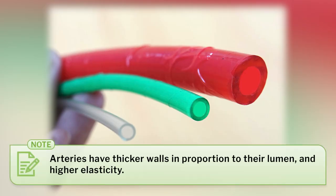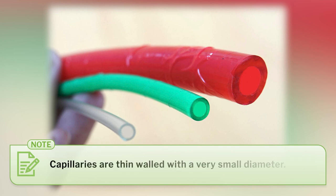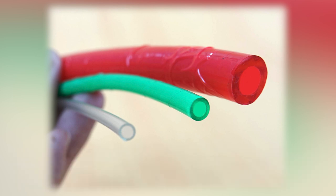Blood is transported through blood vessels. Teaching students the characteristics of arteries, veins, and capillaries using analogy is a good idea. A tube with a thicker wall in proportion to its lumen and higher elasticity can represent an artery, while a tube with a thinner wall and less elasticity can represent a vein. A thin tube with a small diameter can show a capillary. Note that these tubes only represent the comparative wall thickness of the three types of blood vessels.